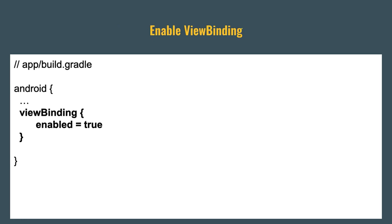This is all happening via a compiler option that generates this code for us, and we enable that in our app's build.gradle file. Within the Android configuration block, we add the viewBinding configuration and set enabled equals true. Once you've done that and done a sync and maybe a rebuild on your project, it should generate these binding classes for you based on the XML.